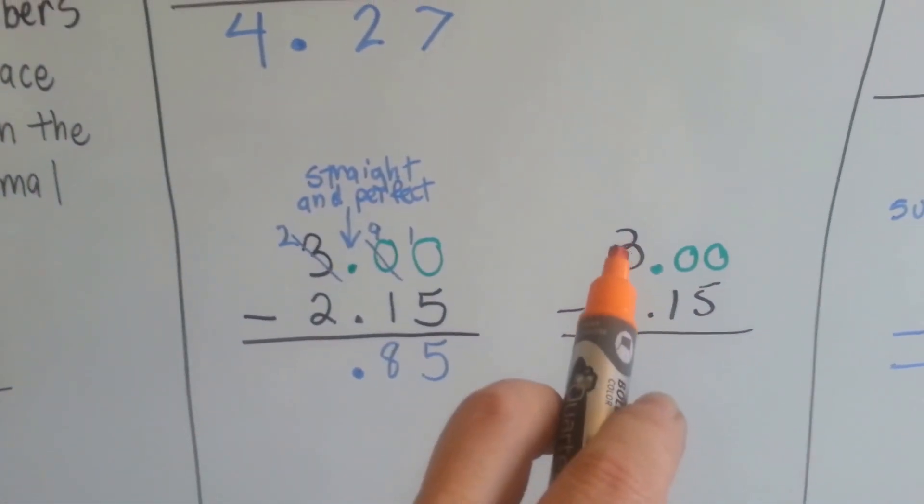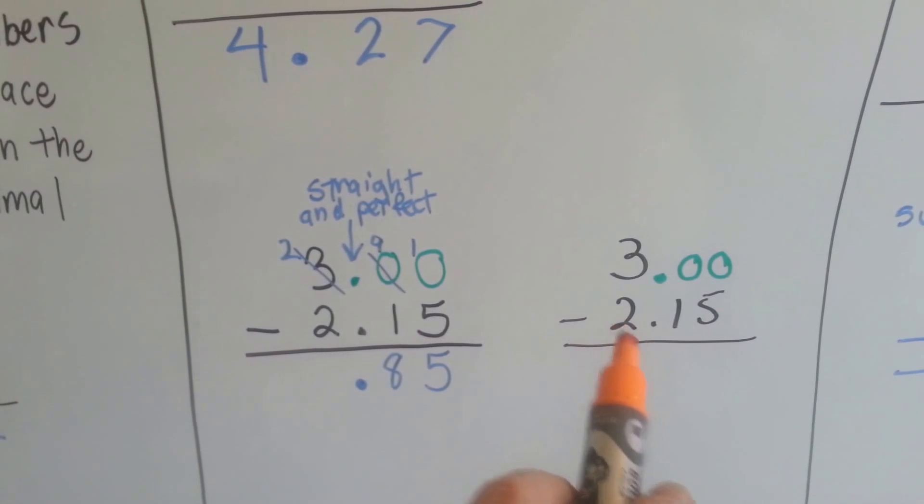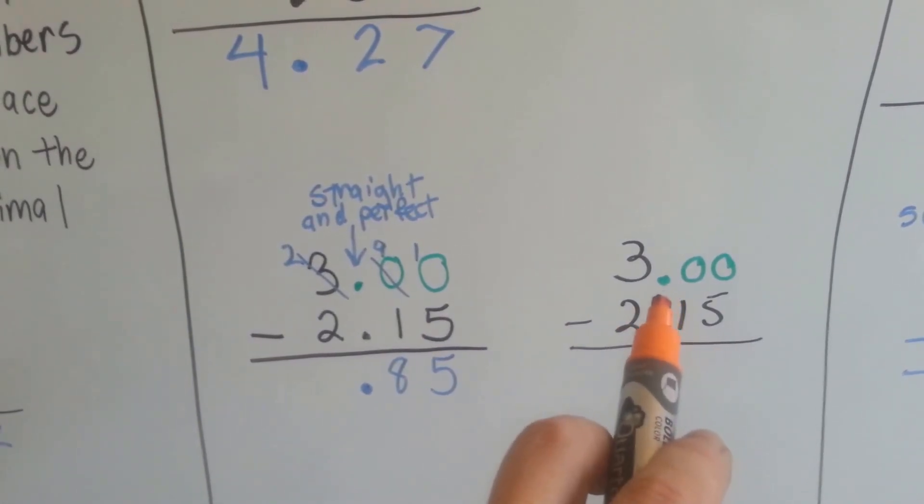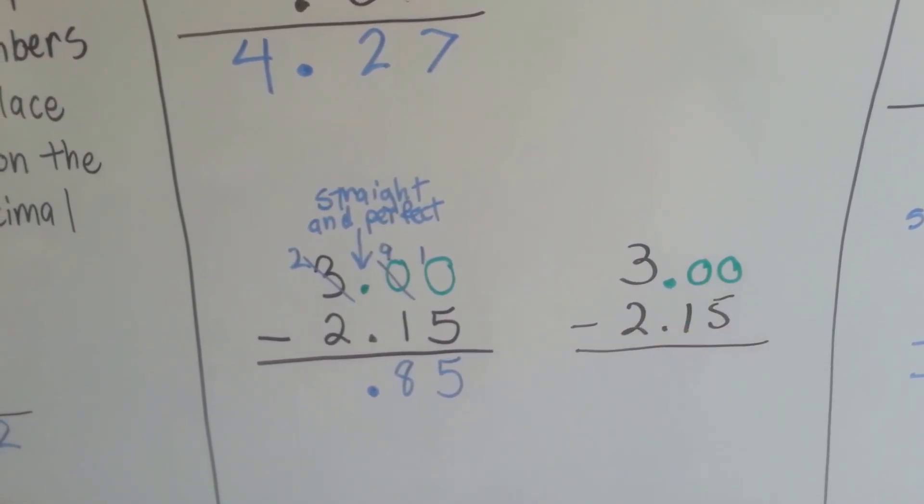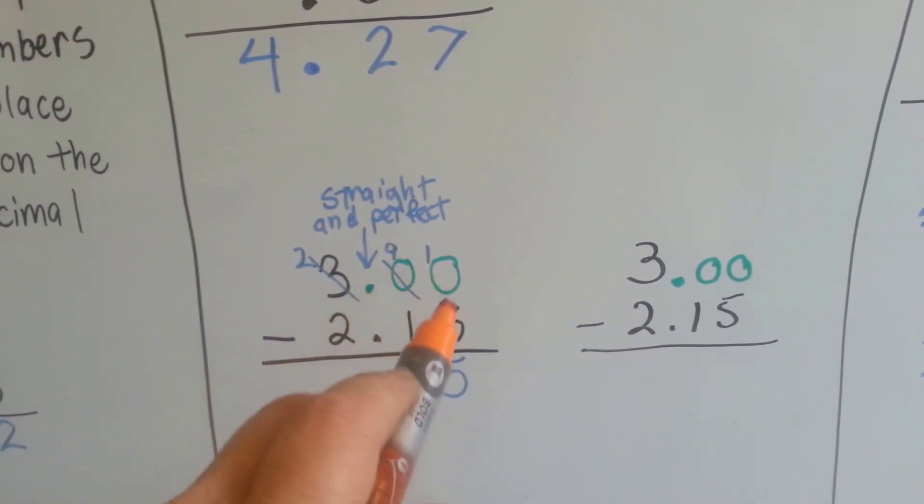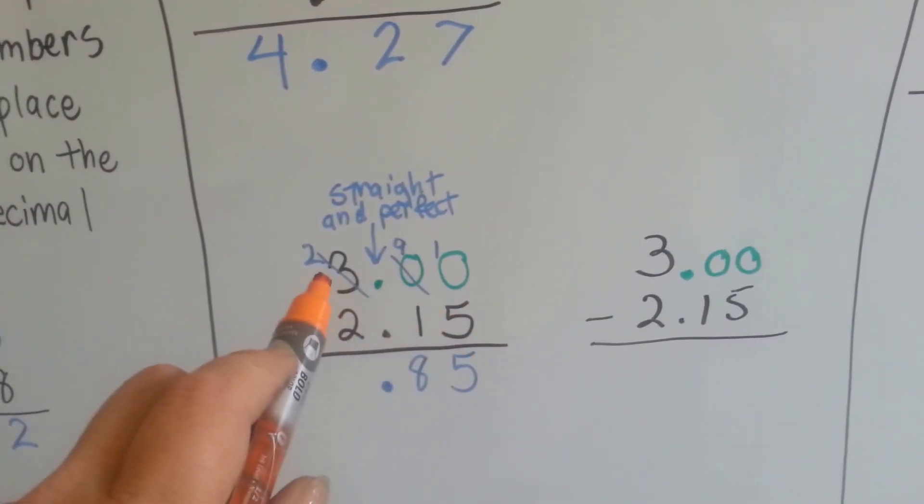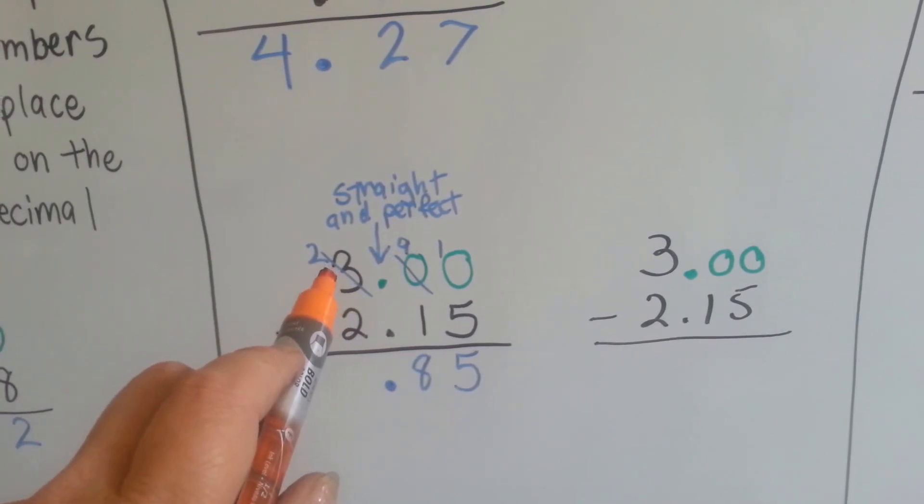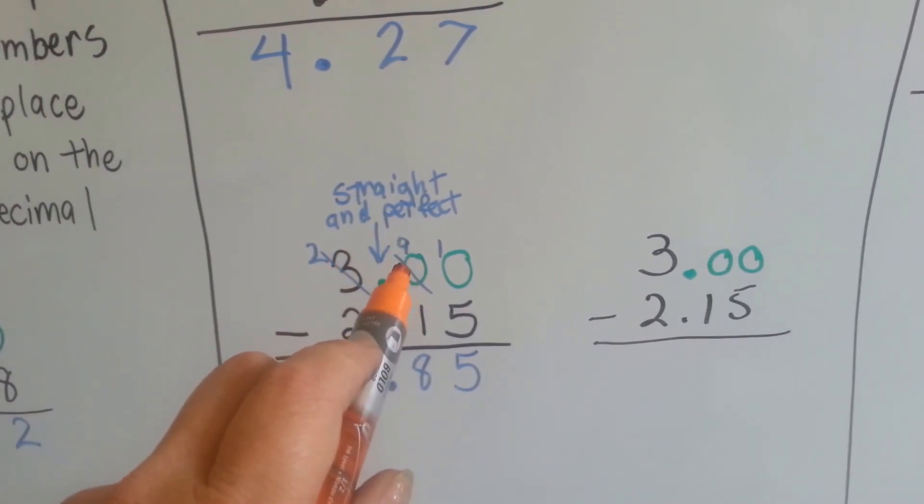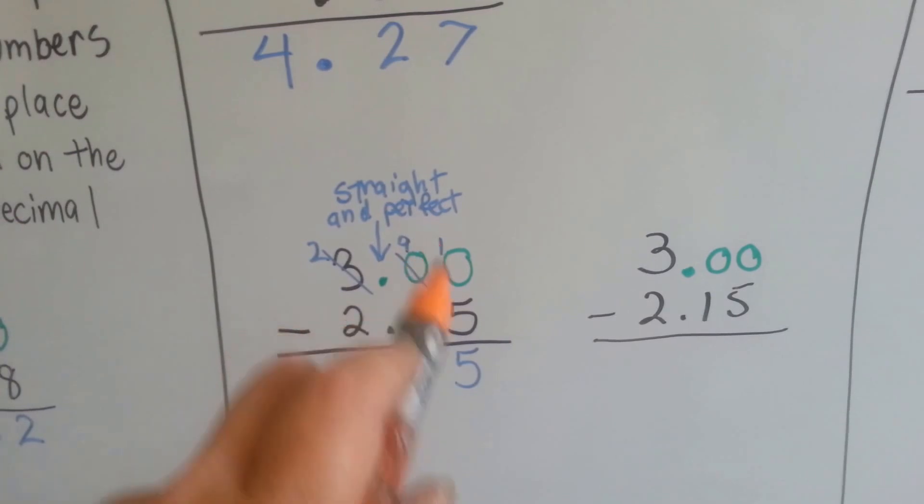If we have just a whole number like 3 and we want to take away 2 and 15 hundredths, we can actually add the decimal point and the zeros. That way we can borrow. We can't have zero and take 5 away so we borrowed from the 3. It became a 2. The tenths place became a 9 and we gave a 1 to the hundredths place.